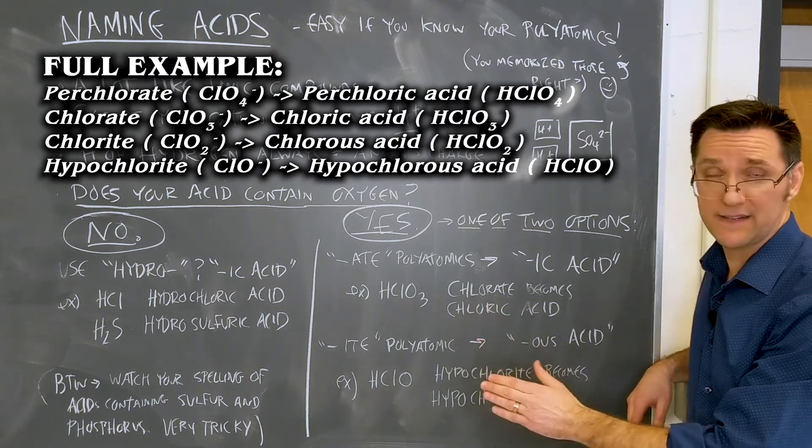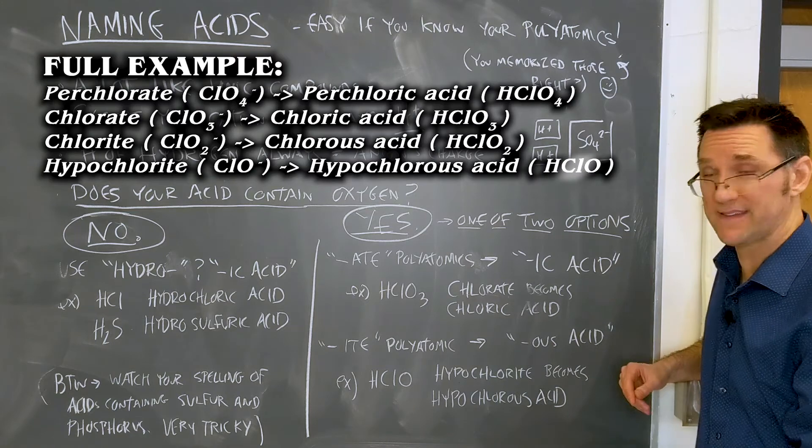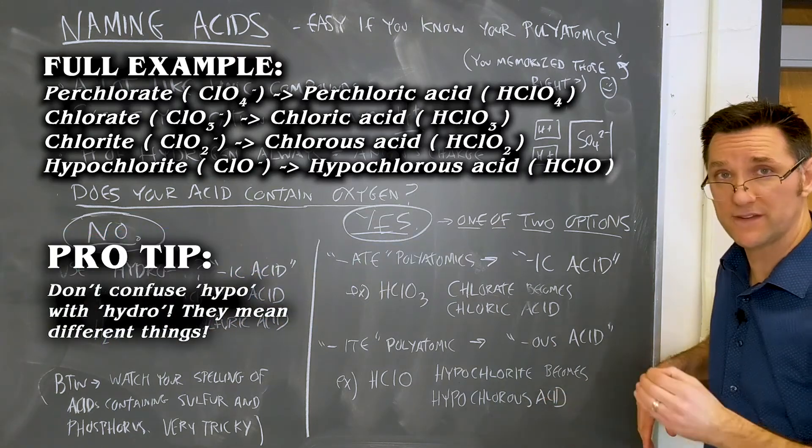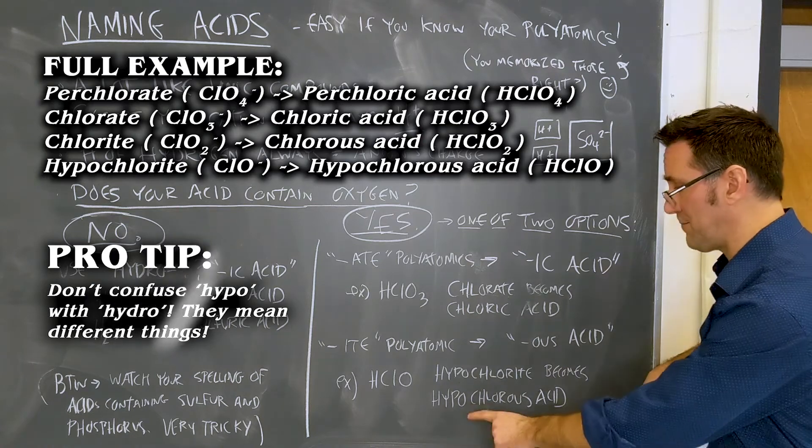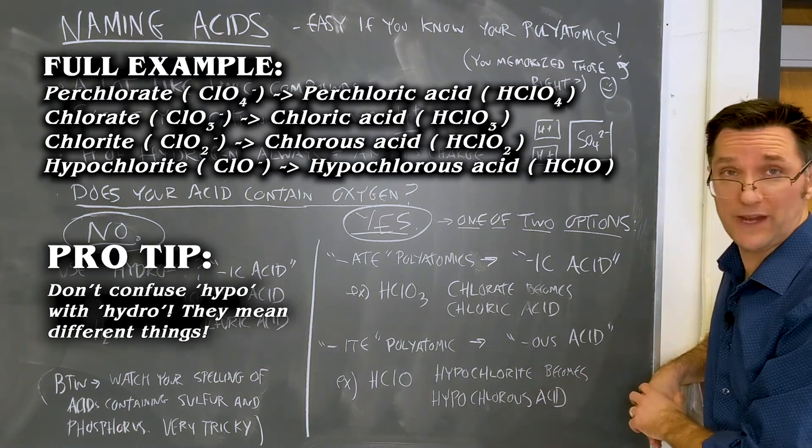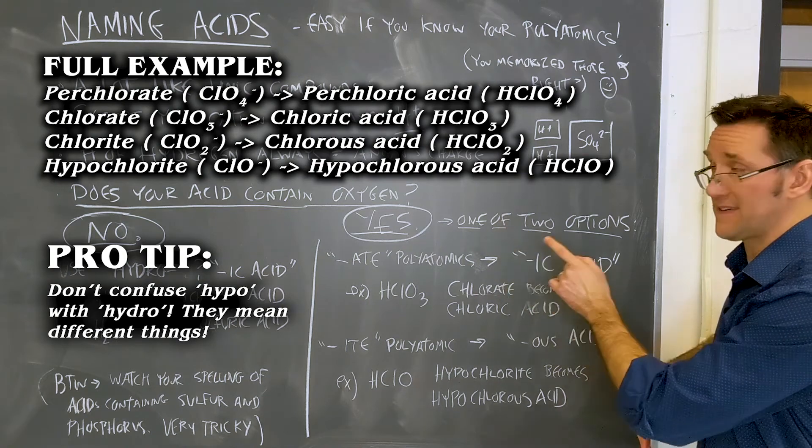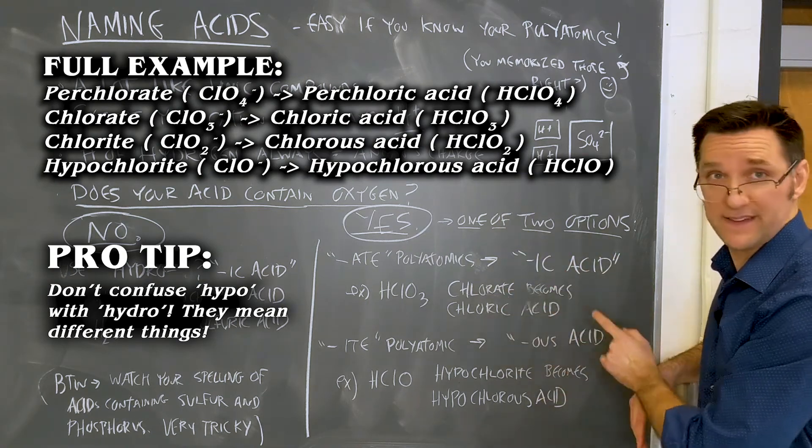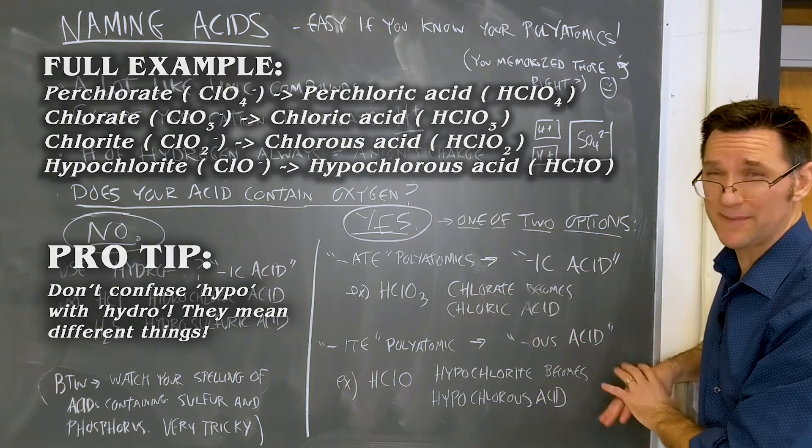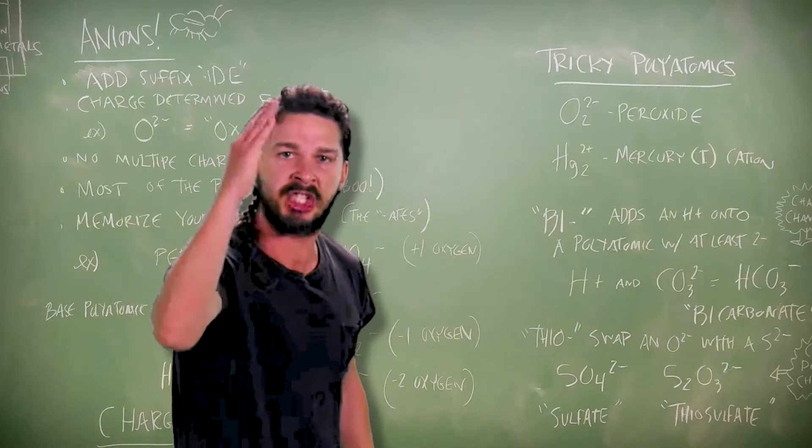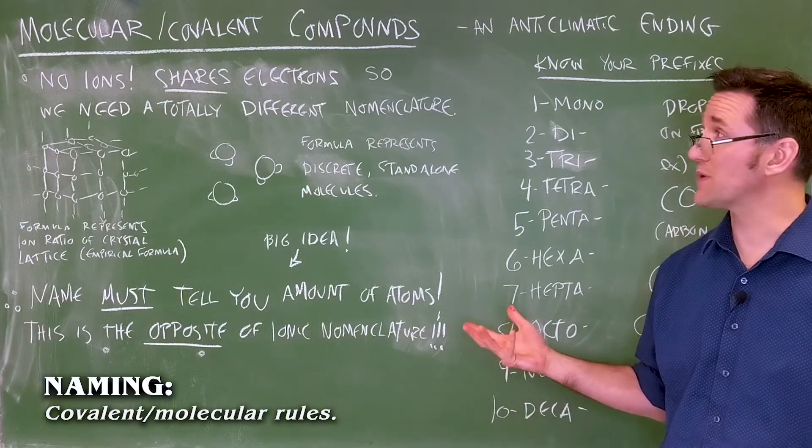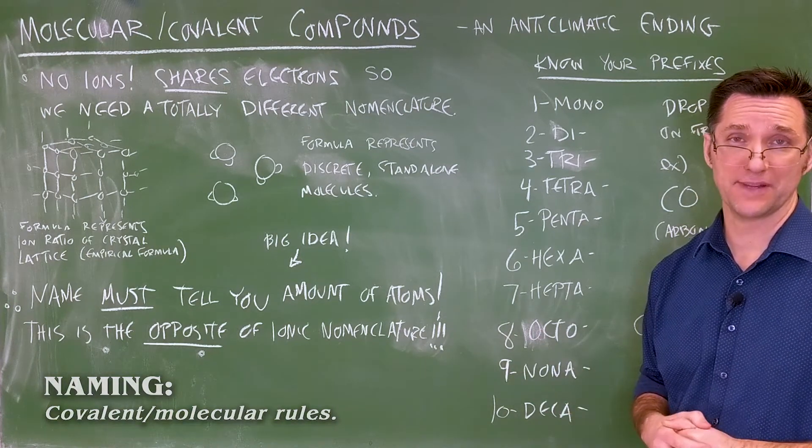If you have an -ite polyatomic, same thing, except the ending of the acid becomes -ous acid. So hypochlorite would become hypochlorous. -ite becomes -ous. Easy way to remember this, I ate something icky. Sprite is delicious. Don't drink pop. It's like liquid candy. Yes, you can! Just do it!